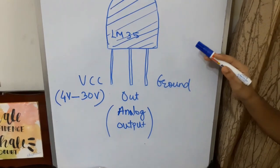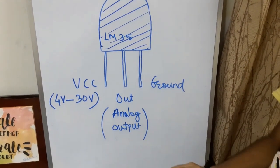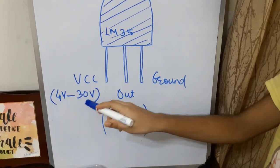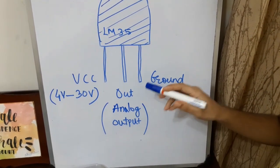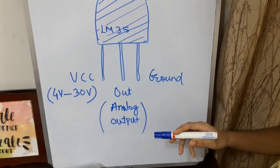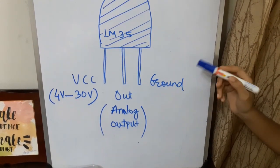Now, let us understand these pins in detail. VCC should be connected to power supply in the range of 4 volts to 30 volts. Out pin gives us analog output, which is directly proportional to the temperature. Ground pin should be connected to ground.